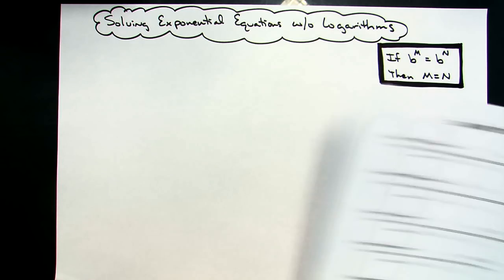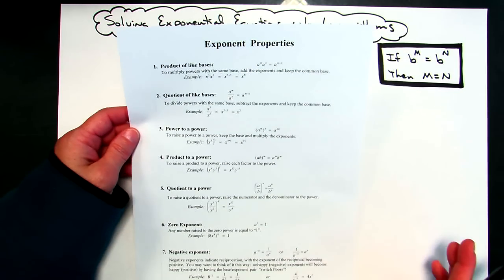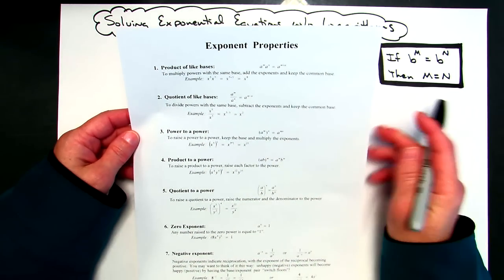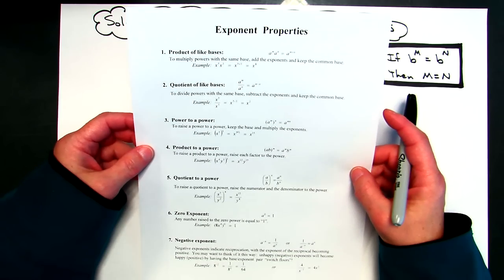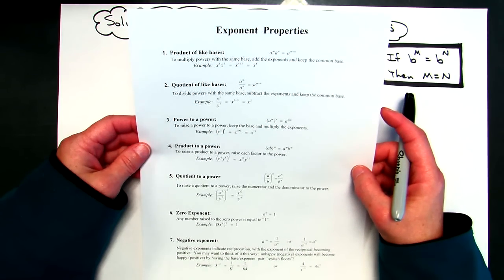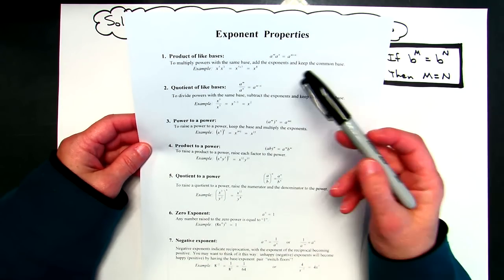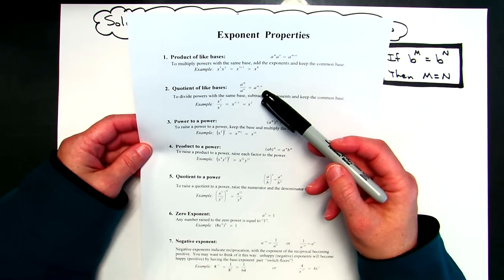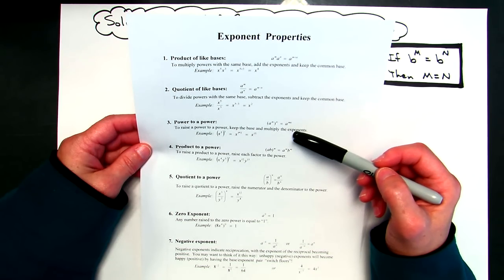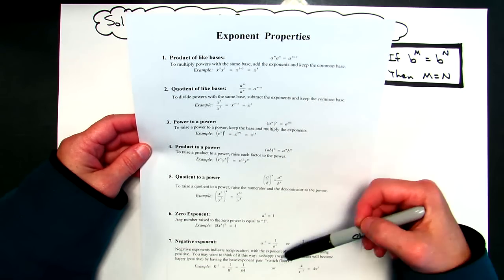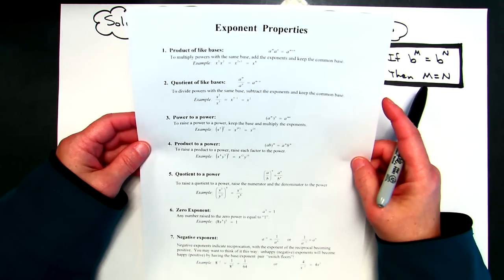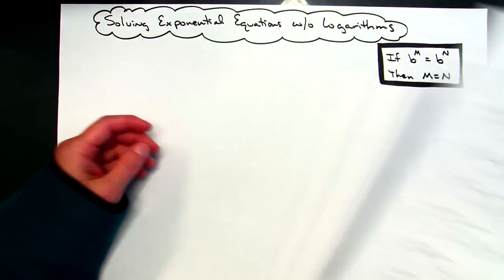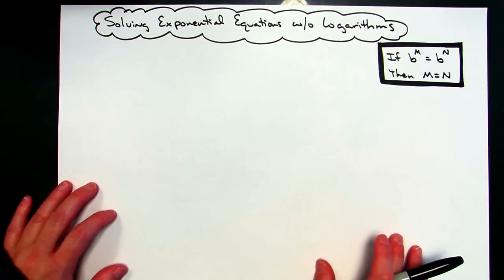Now in order to do this, you do have to be familiar with a bunch of exponent properties — laws of exponents. I realize you cannot read this in this video; I'll have this paper available for download in the comment section below. Things like: when multiplying like bases, you add the exponents; when dividing like bases, you subtract the exponents; power raised to a power, you multiply the exponents. I've got seven different laws of exponents that will become very handy when manipulating these equations to make your bases the same.